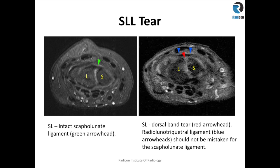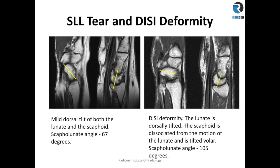Be careful — there is another extrinsic ligament which runs dorsal to, or superficial to, the scapholunate ligament, called the radial lunotriquetral ligament, as demonstrated by the blue arrowheads. This is an extrinsic ligament of the wrist. Mild dorsal tilt is accepted; it may be that the patient had the wrist scanned in ulnar deviation, which can give false positive results.